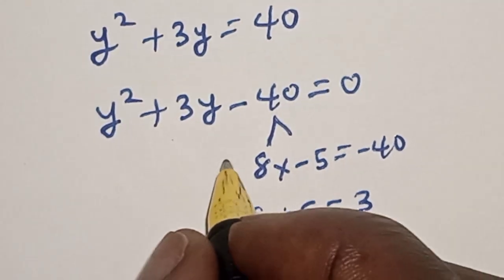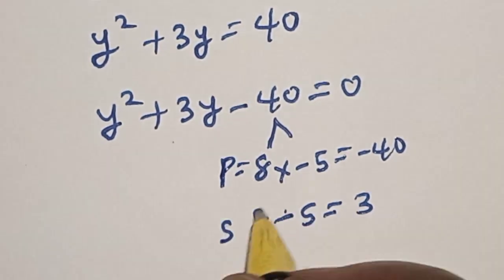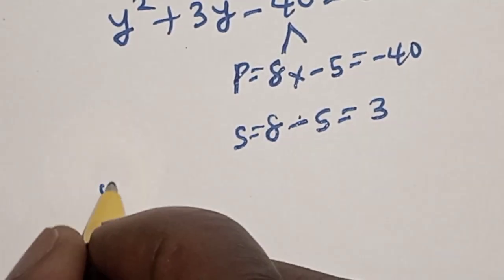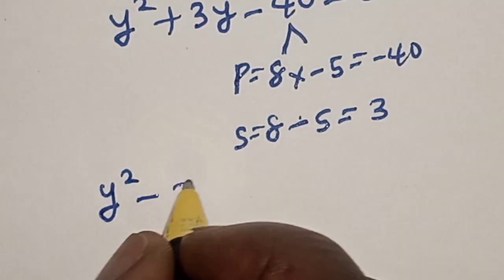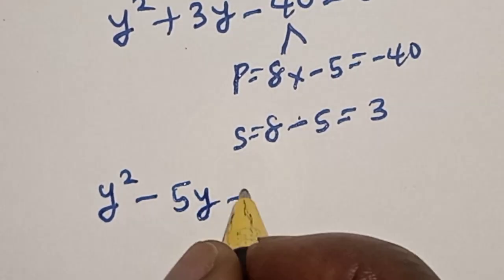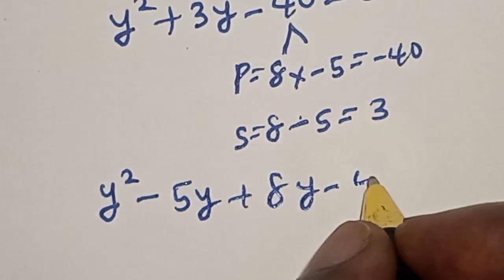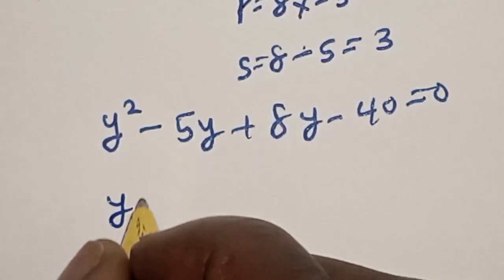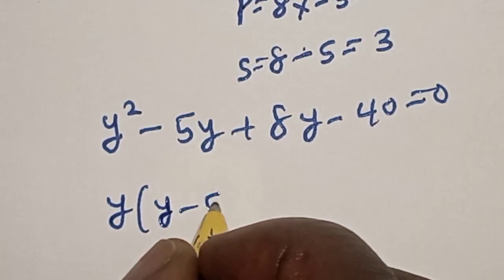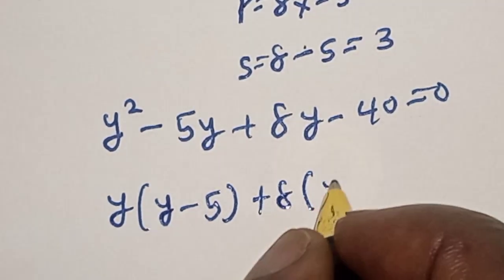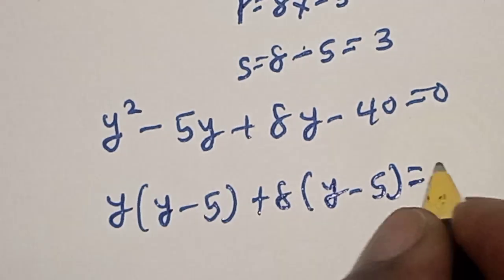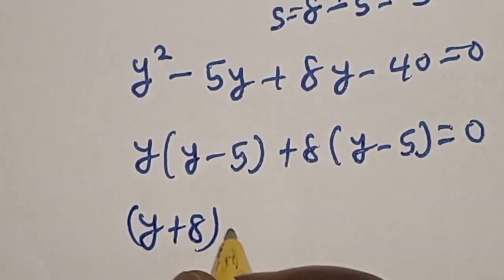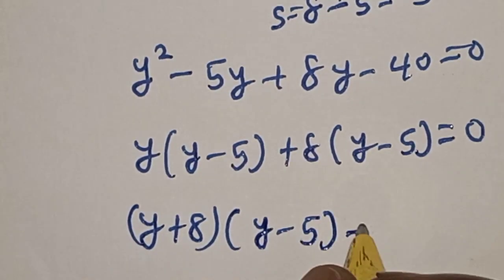Now let's substitute. We have y squared minus 5y plus 8y minus 40 is equal to 0. Then this is y into y minus 5 plus 8 into y minus 5 is equal to 0. Therefore, y plus 8 multiplied by y minus 5 is equal to 0.